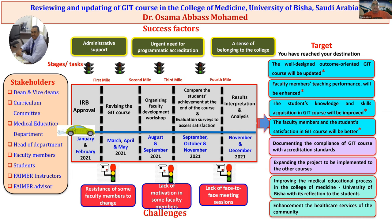My project stages started from IRB approval with revising of the GIT course, then organizing a faculty development workshop, then comparing student achievement at the end of the GIT course with the previous academic year's achievement, and an evaluation survey to assess student and tutor satisfaction. Lastly, data collection and result interpretation with analysis.